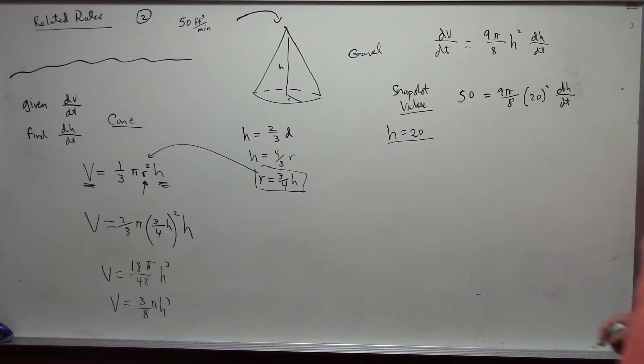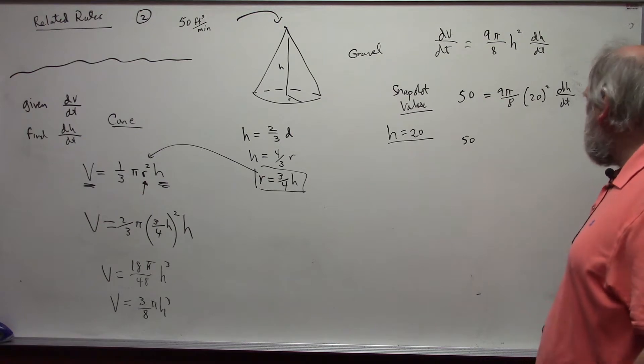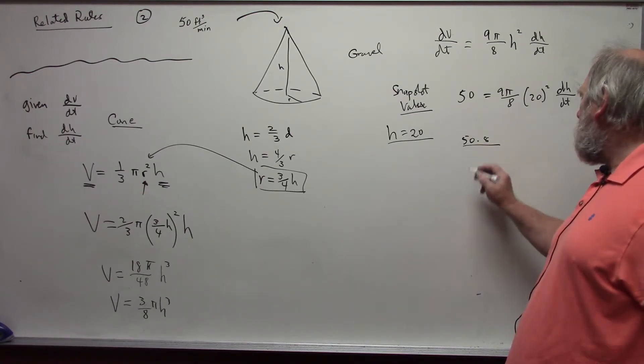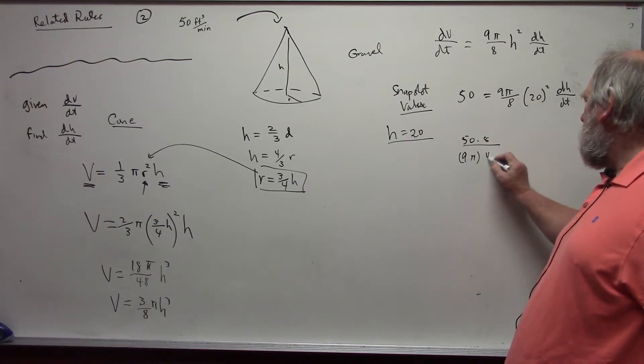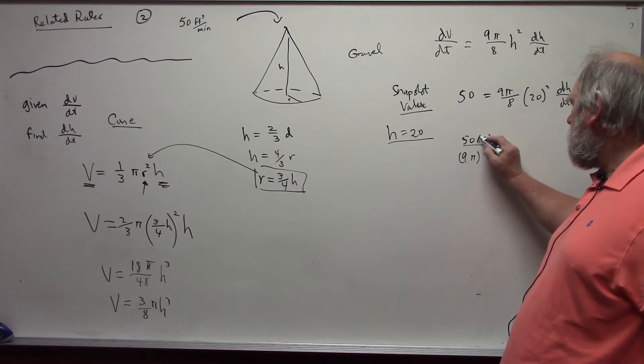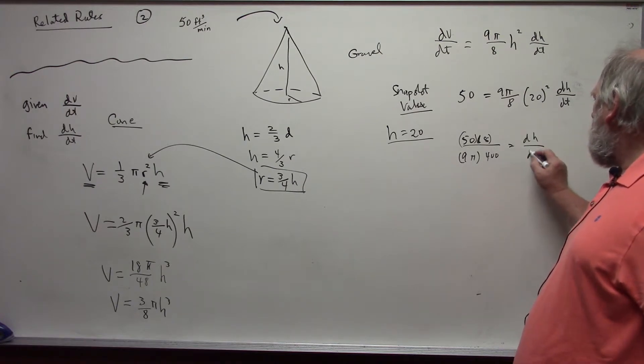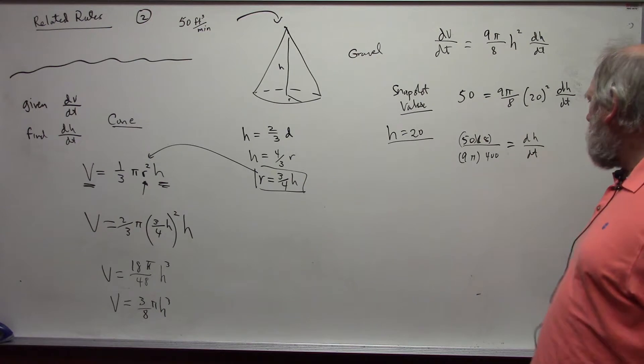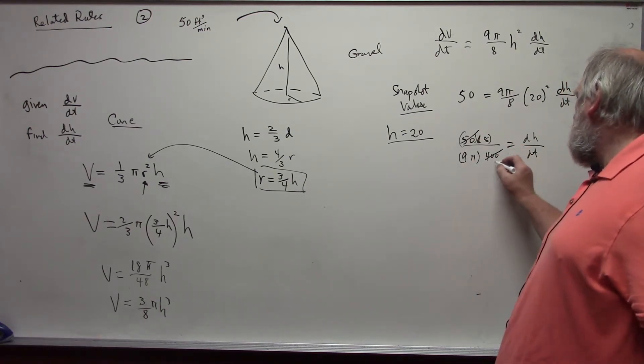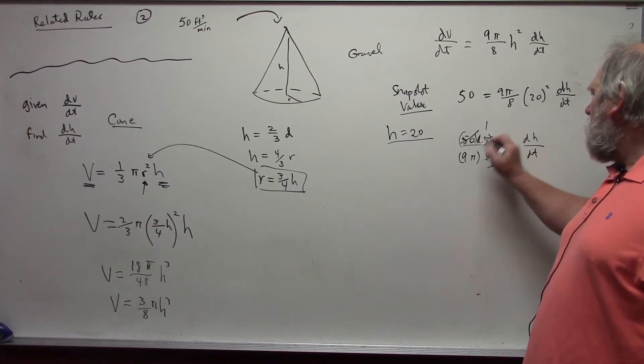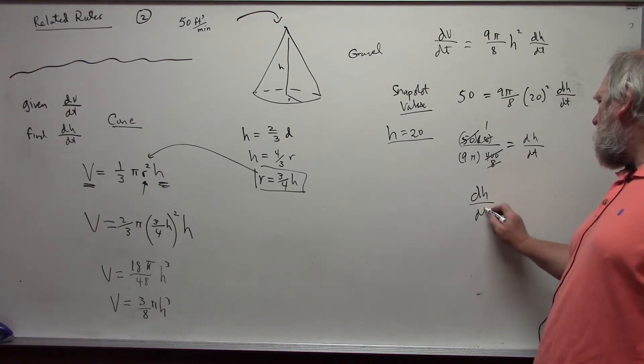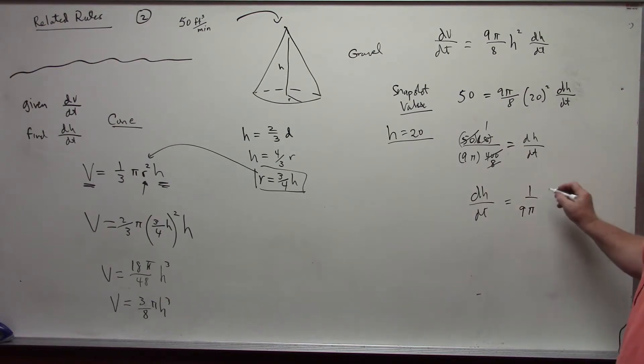We can solve now for dh/dt. And this becomes, I'm going to do this kind of old school. This becomes 50 times 8 over 9 pi times 400. Let me do it this way. And we can use a calculator, or I'm going to do this. As I said, 50 goes into 400, 8 times. And so, all we end up with is dh/dt is equal to 1 over 9 pi feet per second. Make sure we put the units in at the end. We don't have to put them in all the way through, but we do have to put them in at the end. This is cubic feet per second. We're dividing it by feet squared. That leaves me with an answer of feet per second.